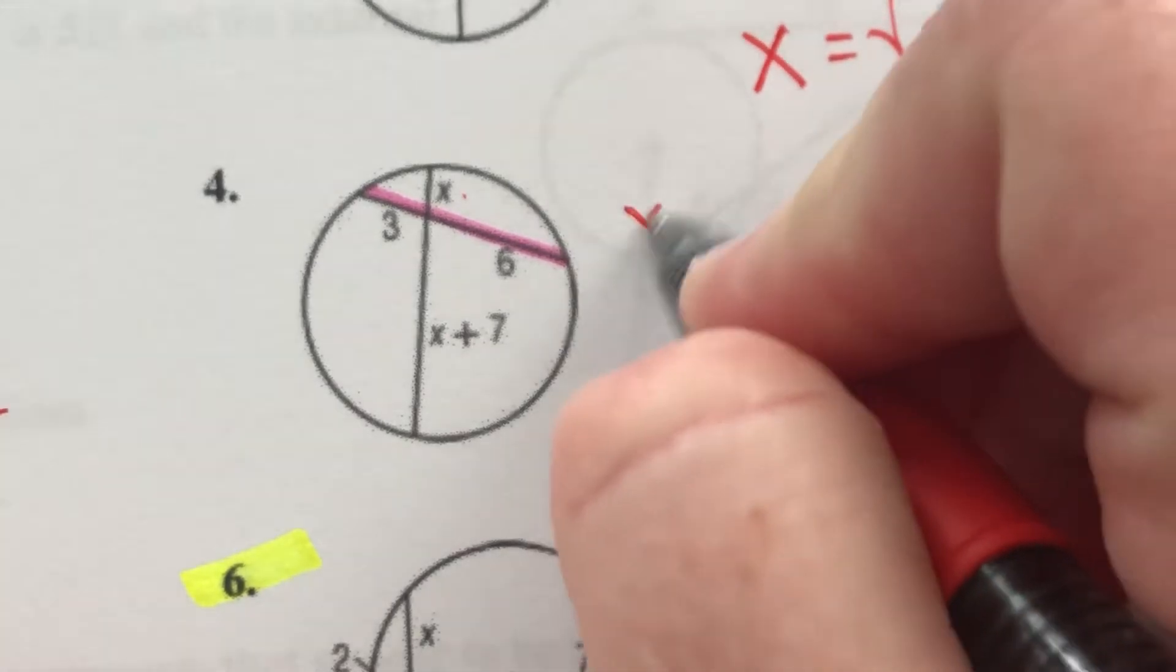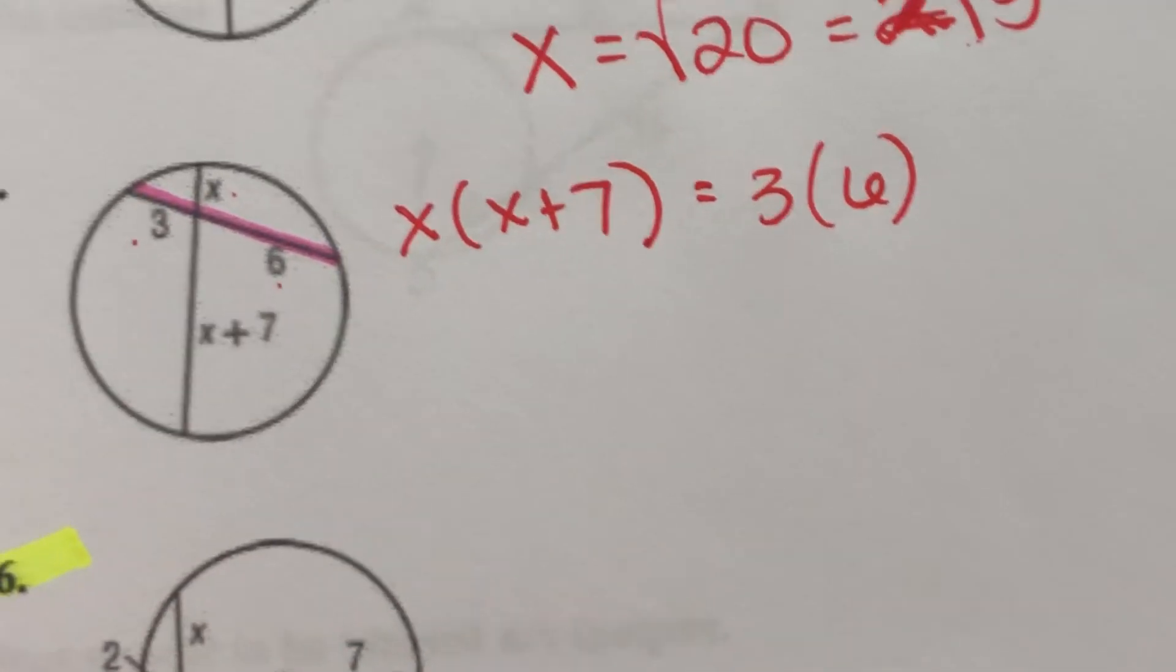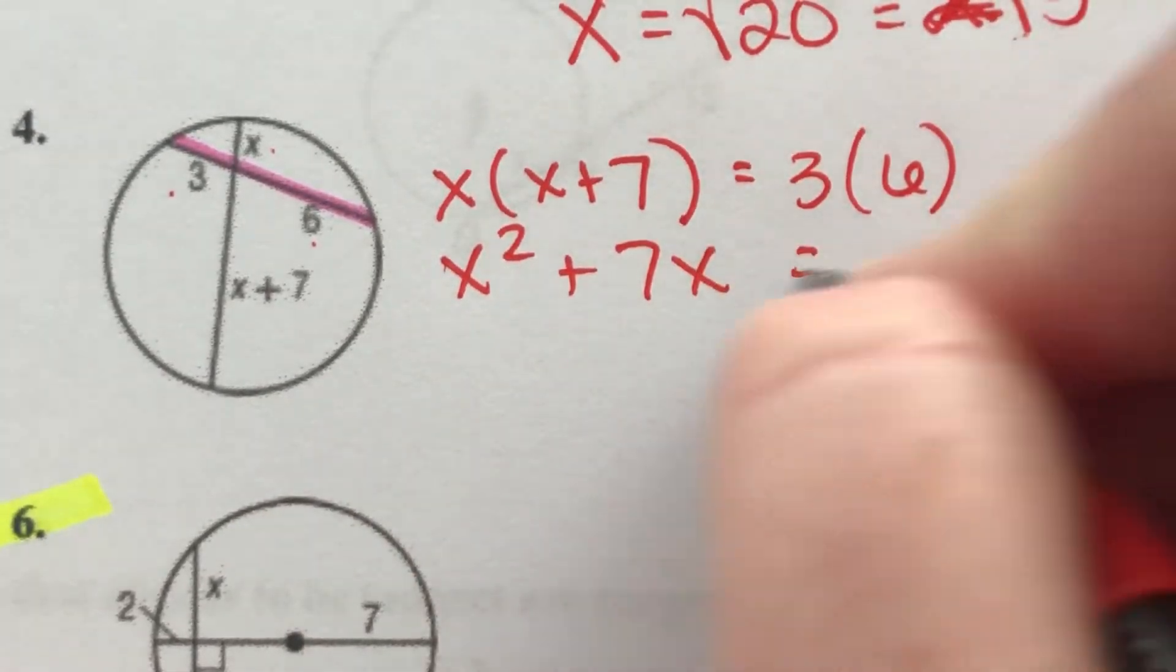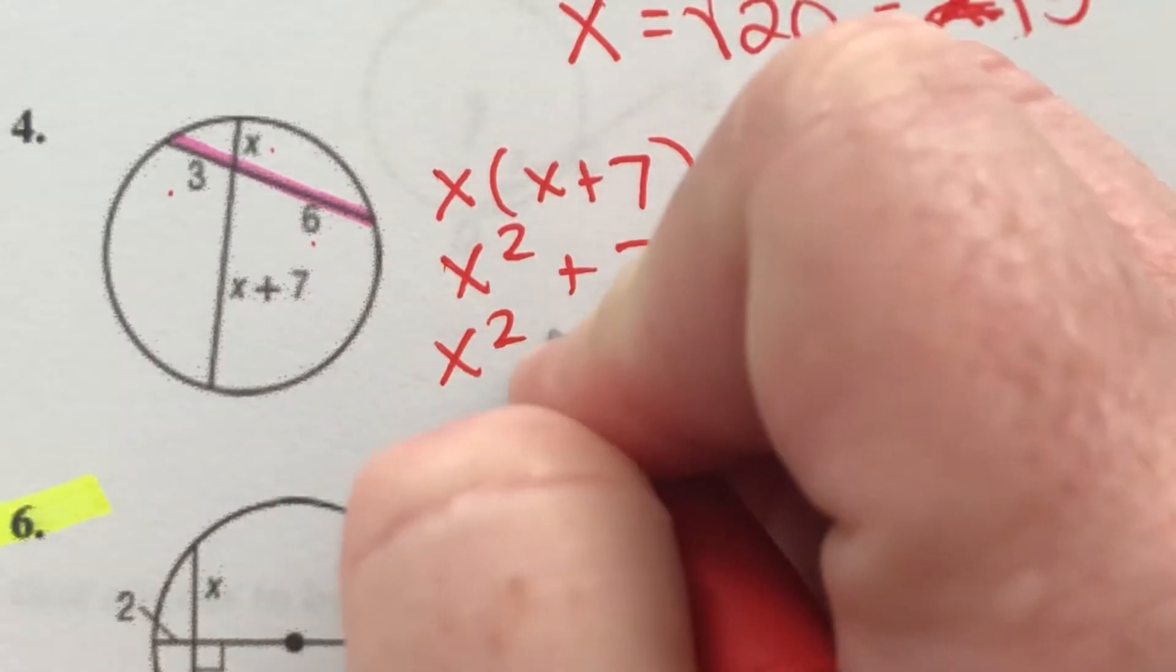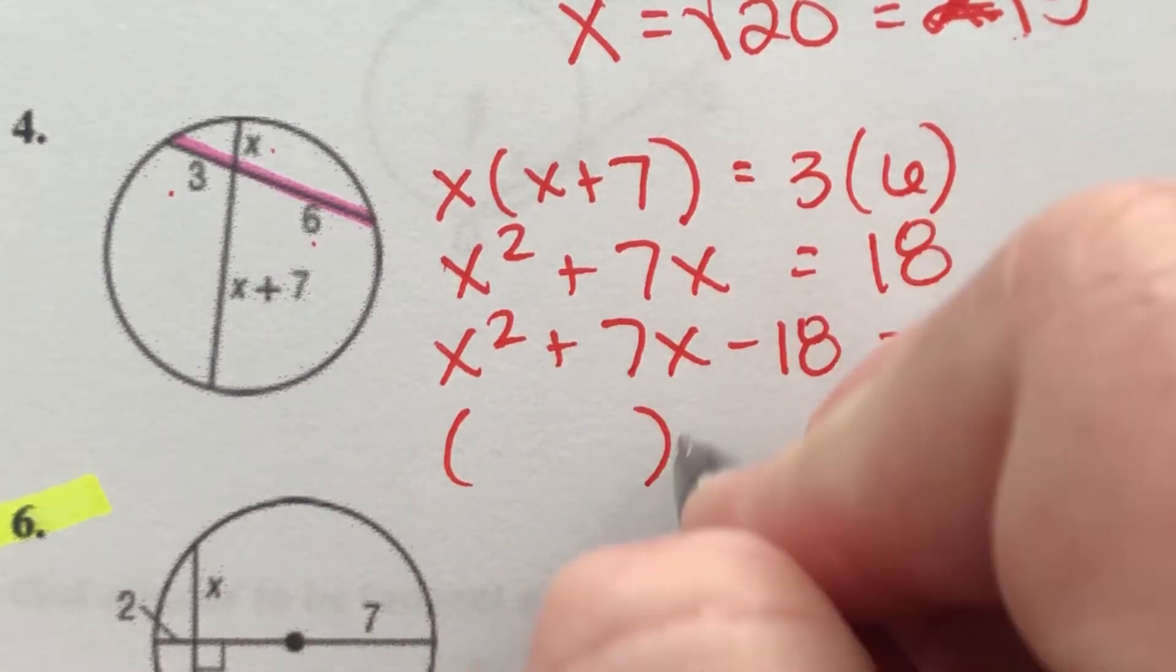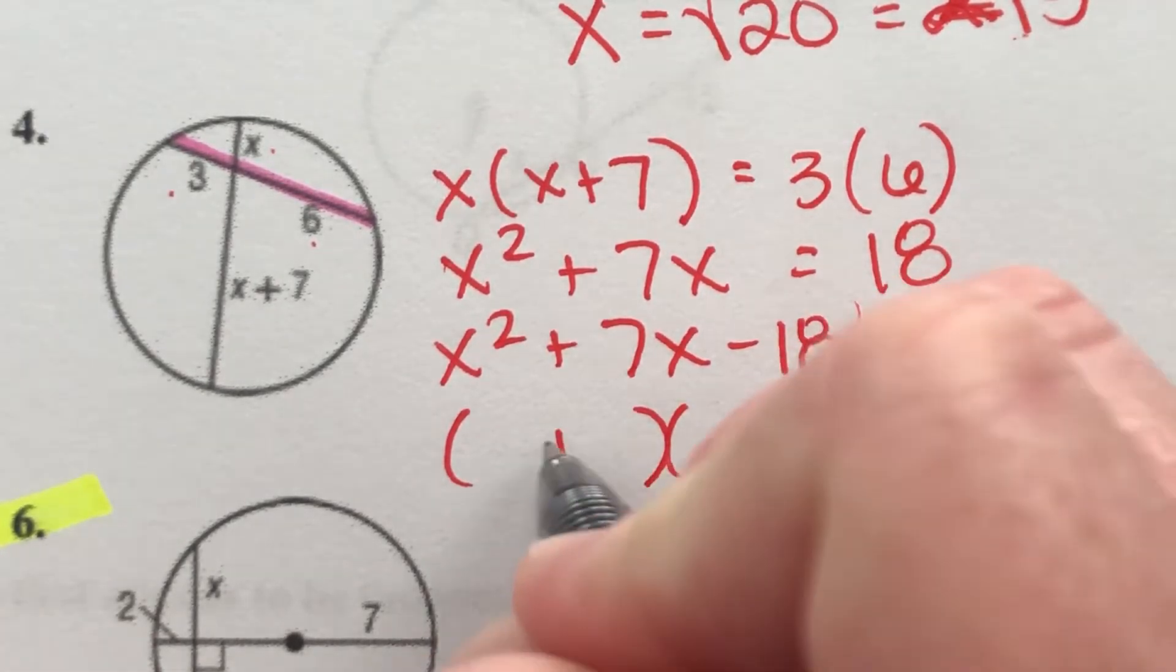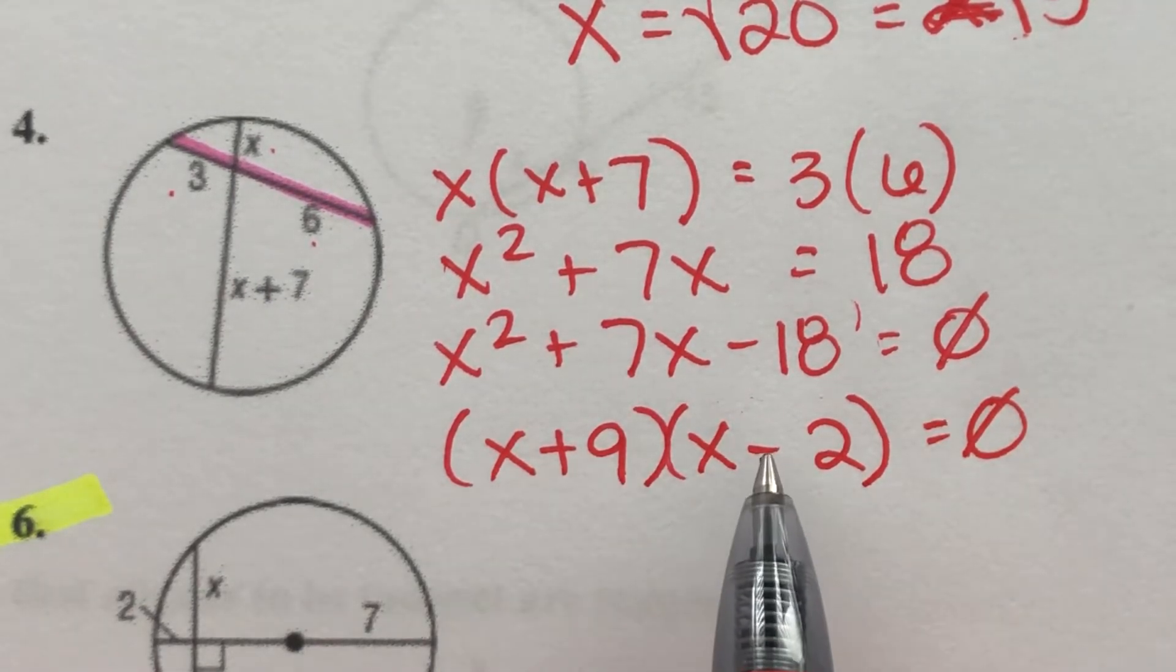Here, X times X plus 7 should be the same as 6 times 3. And we're going to end up having a quadratic equation. So you do need to remember how to factor to solve quadratics. So here we have X squared plus 7X equals 18. I need to get zero on this side to make this a trinomial. X squared plus 7X minus 18 equals zero. Then I want to factor this guy. So I'm going to get two binomials. And the factors of negative 18 that add up to positive 7 are positive 9 and negative 2. So I'm going to have X plus 9 as one binomial and X minus 2 as another.